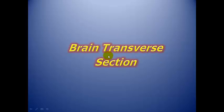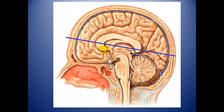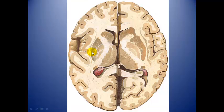To consolidate what we discussed, we will look at some brain transverse sections. We start by viewing how we took our cutting plane — cutting through the genu of corpus callosum, through the splenium, and through the fornix and frontal cortex.